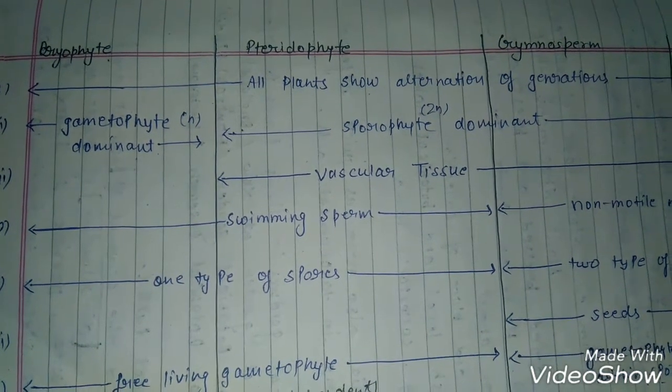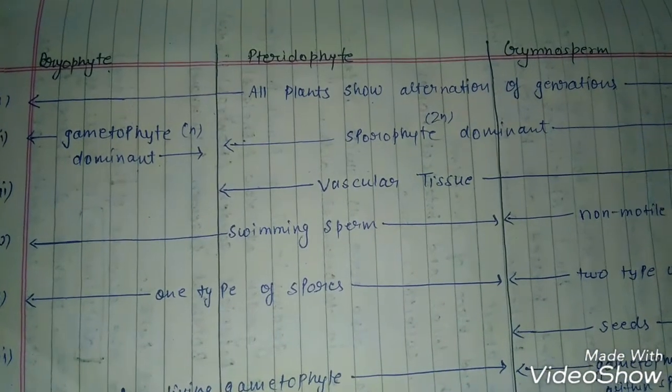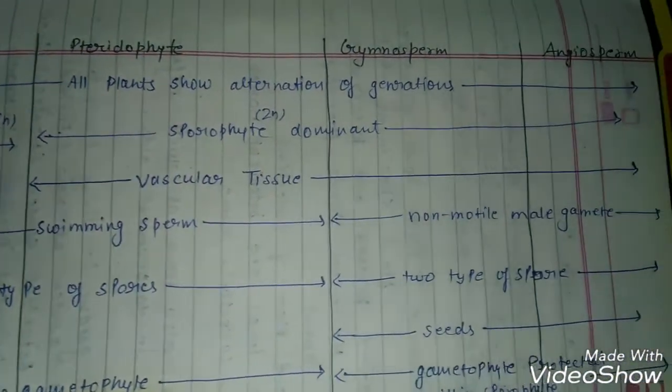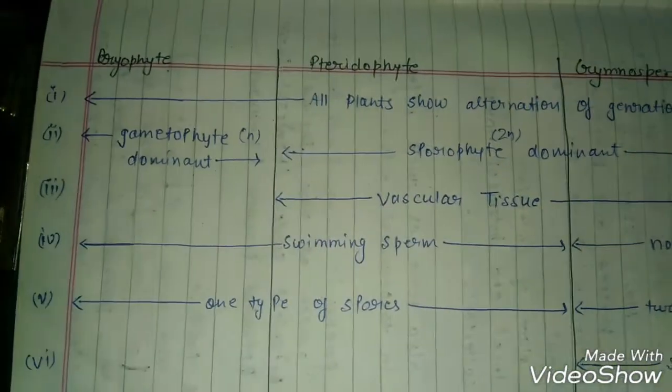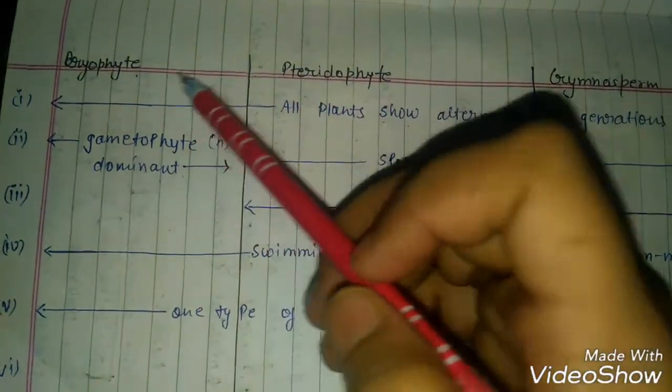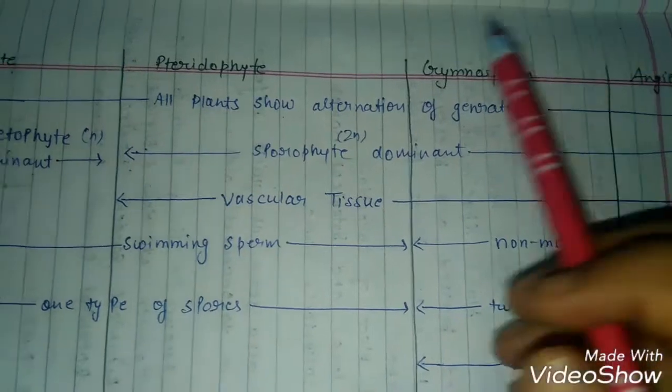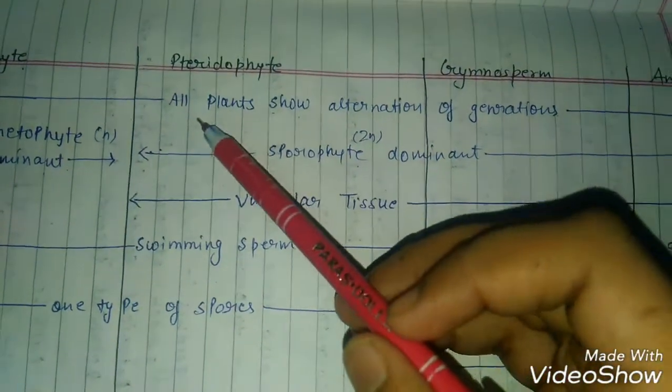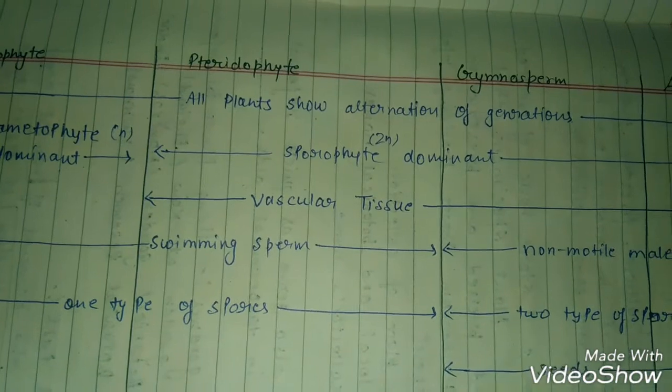So guys, in this video I'm talking about the short tricks for bryophyte, pteridophyte, gymnosperm, and angiosperm. These are the main common things that show all the plants which have alternation of generation.